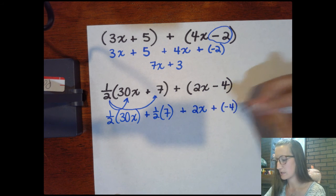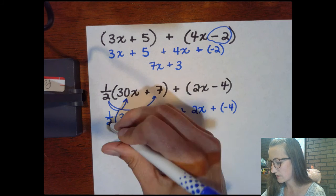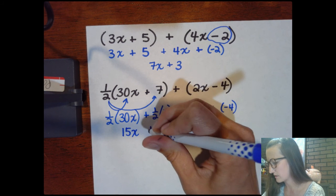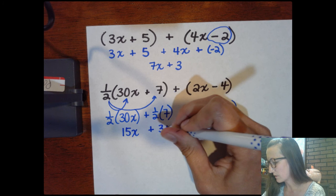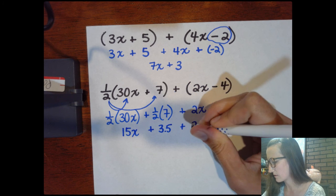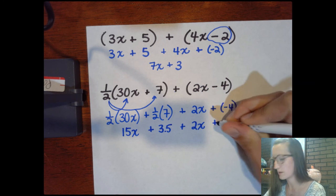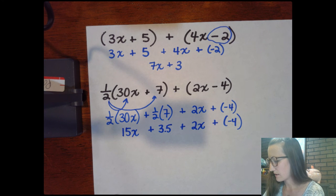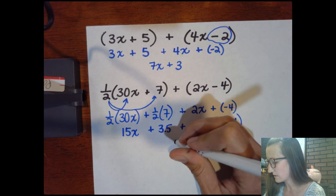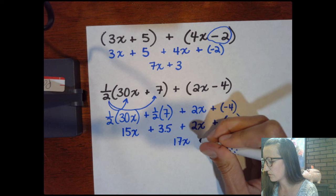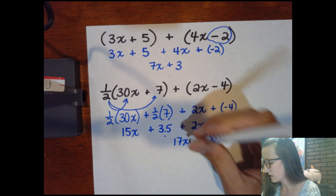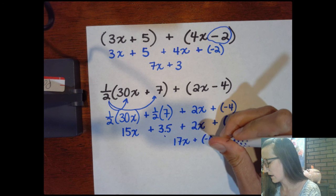And then we put our like terms together. Half of 30x is 15x plus half of 7 is 3.5 plus 2x plus a minus 4. And then we're going to use like terms to put 15x and 2x together. 17x and then 3.5 plus a minus 4 gives us plus a negative half.